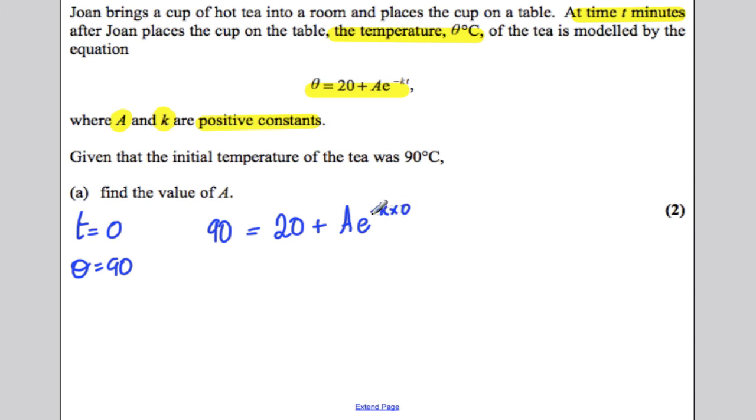Now, K times zero is zero, so e to the zero is one. So we have that 90 is equal to 20 plus A. Therefore, A is 90 subtract 20, which is 70.